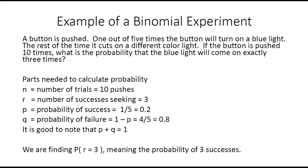Here is an example. When we push a button, there is a 20% or 0.2 chance that a blue light will come on. We don't know what happens the other 80% of the time, but it does not matter. Anything besides a blue light is considered a failure.